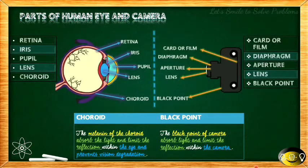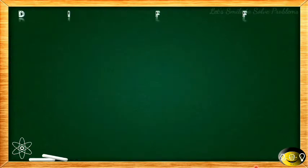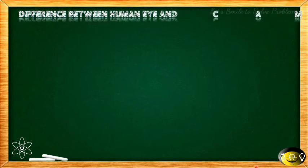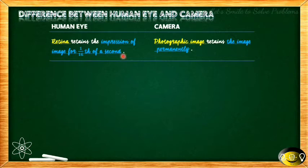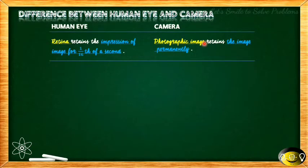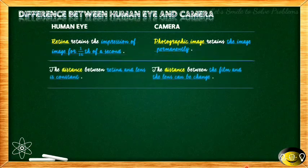Now let's see the differences between the human eye and the camera. The first difference is that the retina retains the impression of an image for only 1/16th of a second — when we see an image, it holds it briefly. But when a photograph is taken with a camera, the image is retained permanently, stored in the camera's memory.